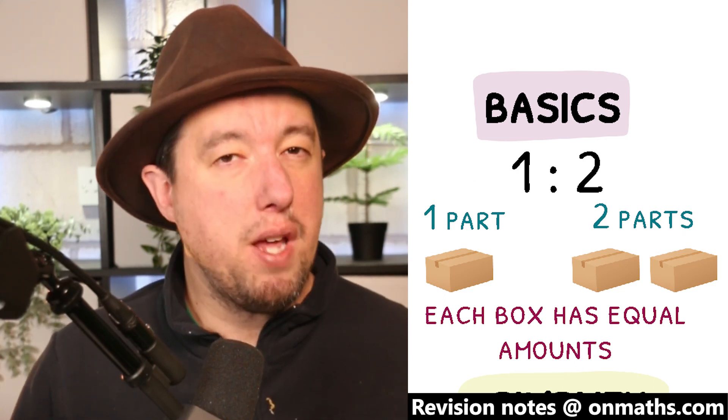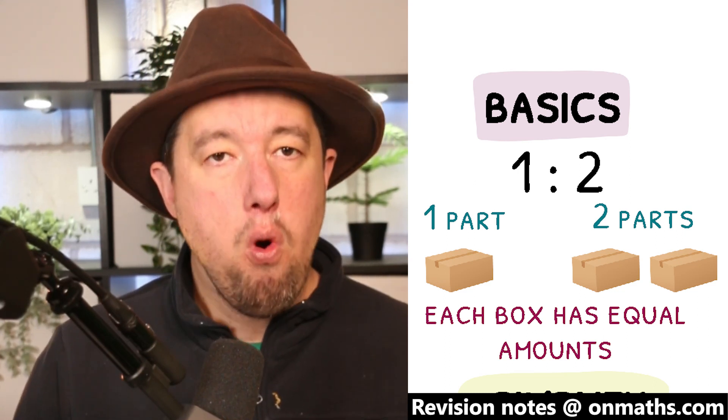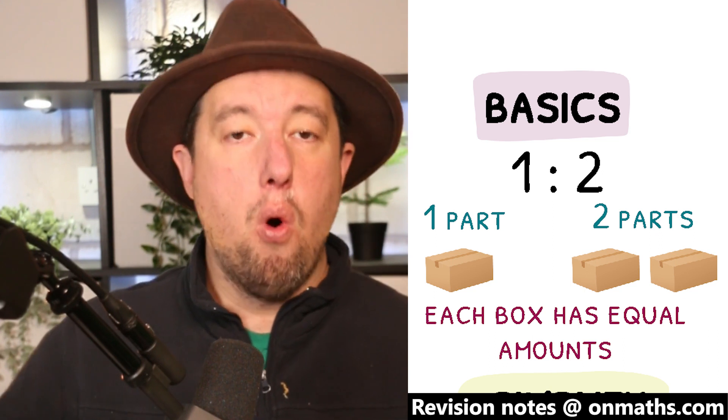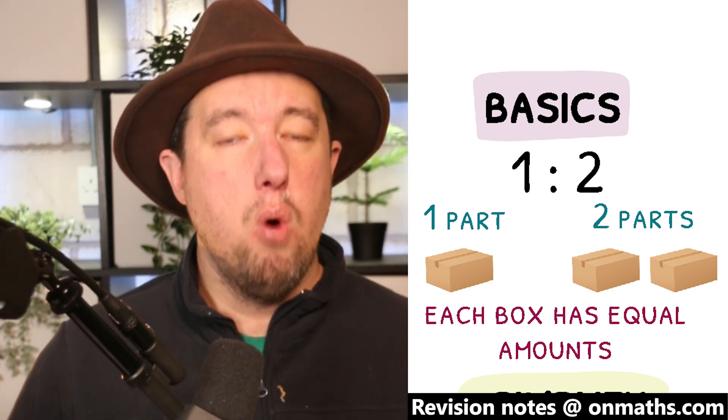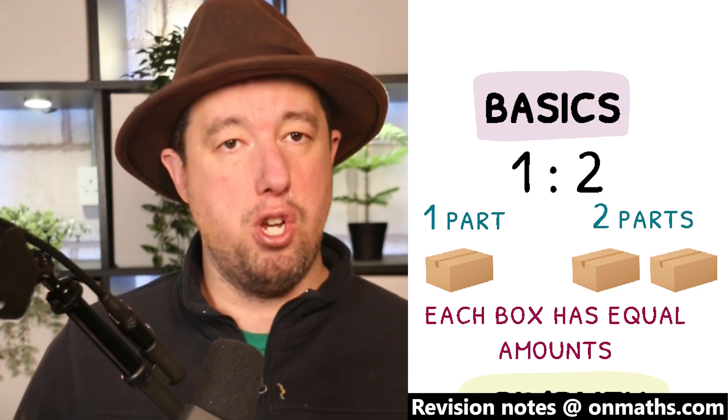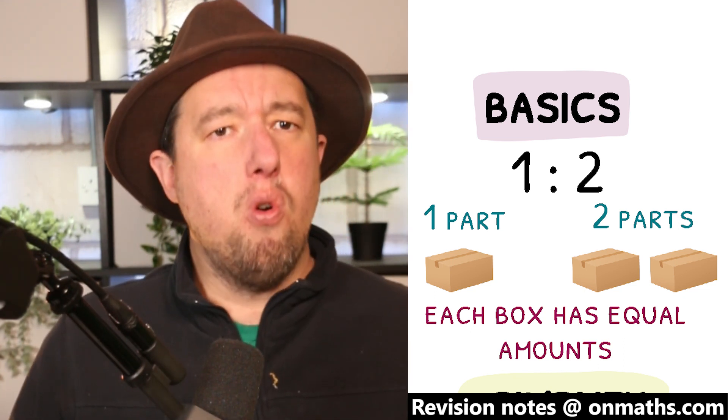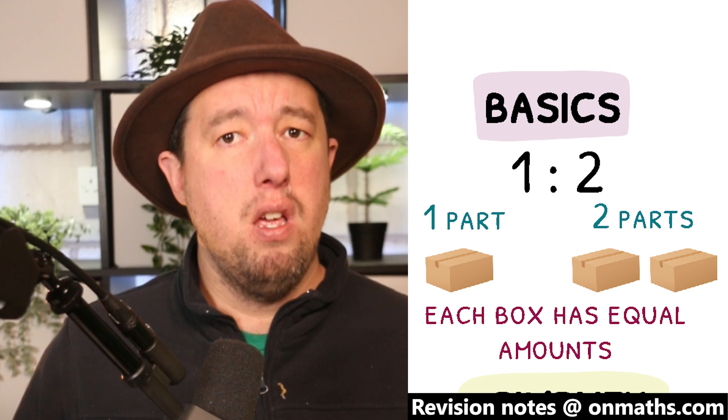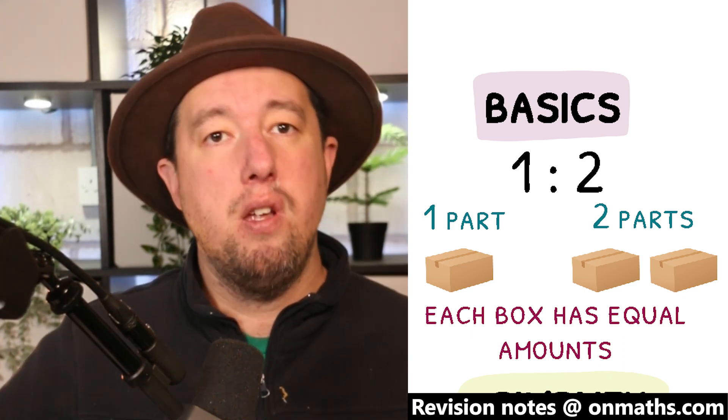Imagine that I know you have twice as many apples as me. If all of my apples filled one box, all of your apples would fill two. We can compare my amount of apples to yours in the ratio of 1 to 2. Instead of boxes, we can call the bits of the ratio parts. So the ratio is 1 part to 2 parts.